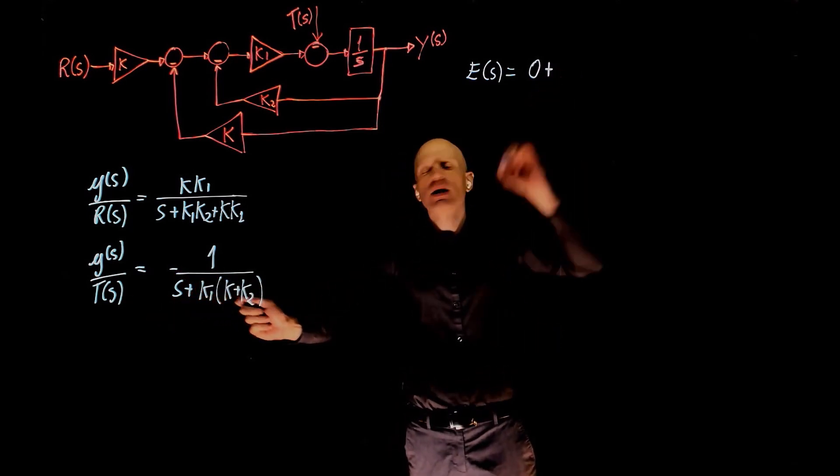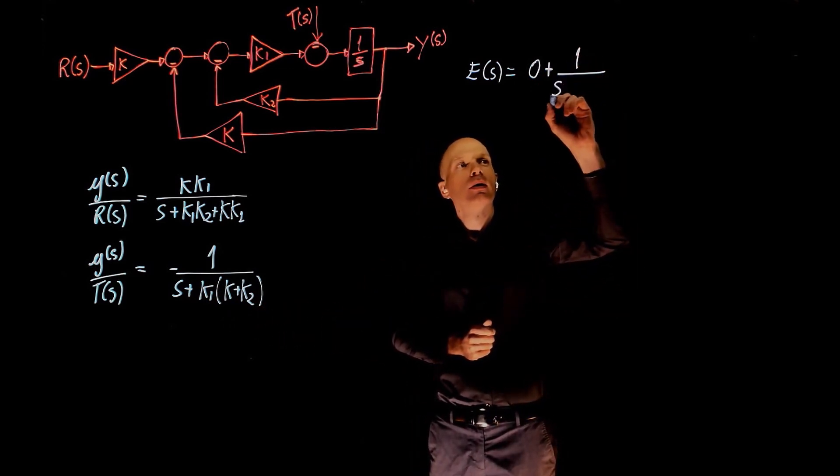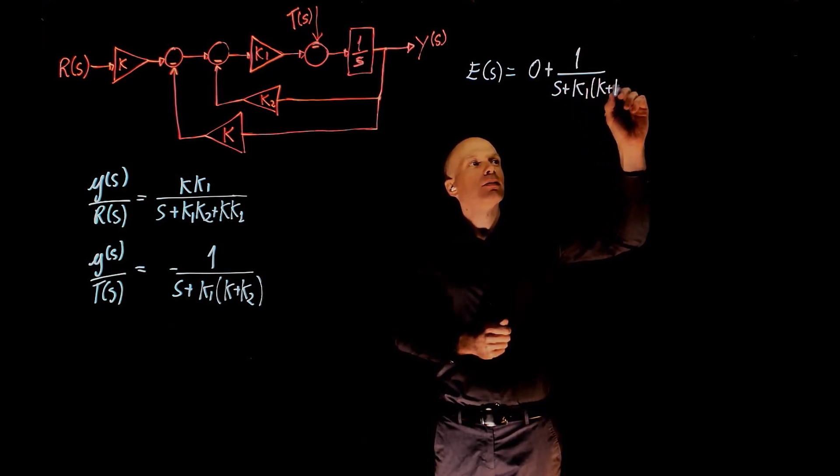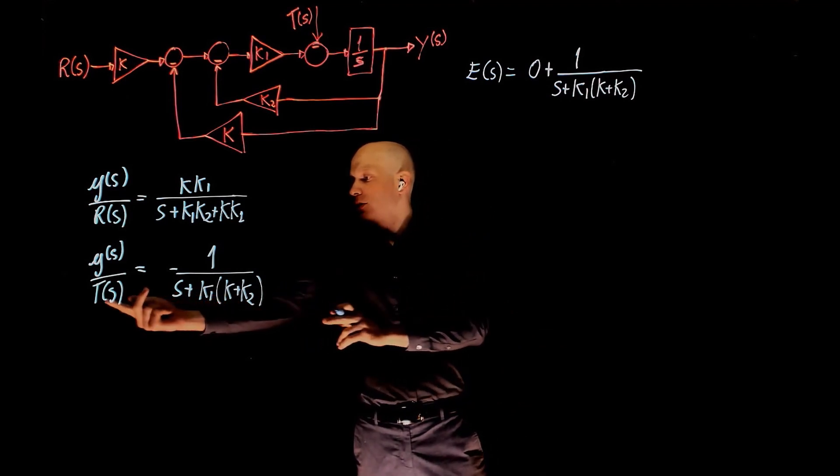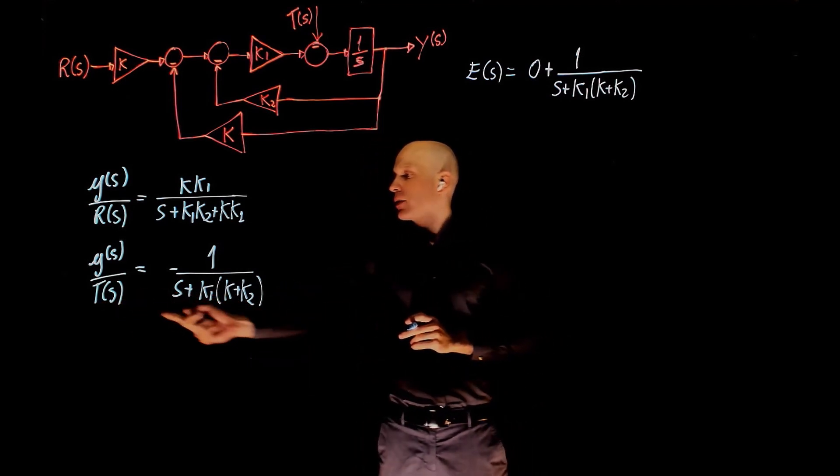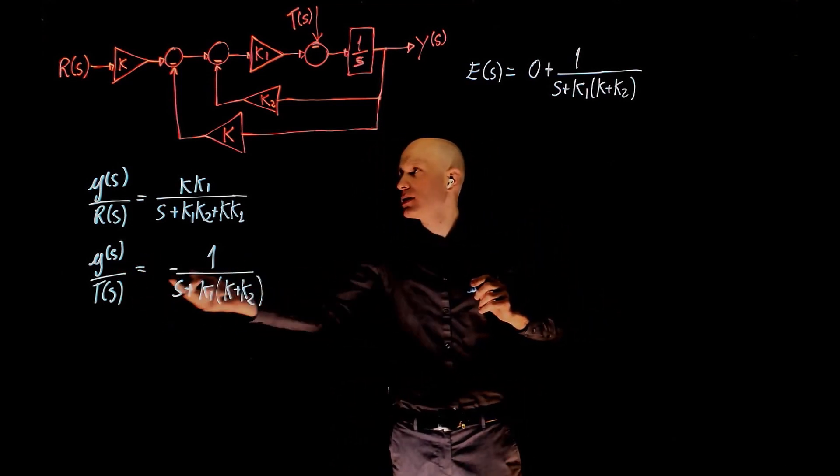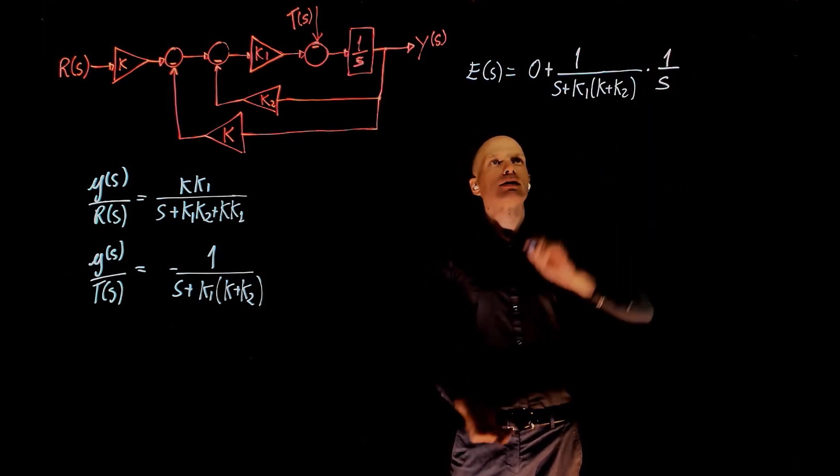The actual position is this times t of s. So negative negative becomes positive, 1 over s plus k1 k plus k2. This is this part of the equation. If you multiply that by t of s, that gives us y of s. So this times t of s, t of s is a step input, so this is 1 over s.